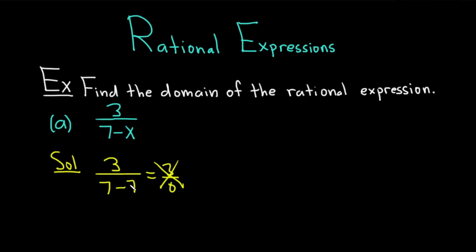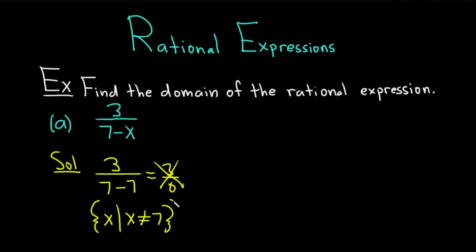The domain is all of the x's except 7. I'm going to write it in set notation — the set of all x such that x is not equal to 7. That's the domain of our rational expression.